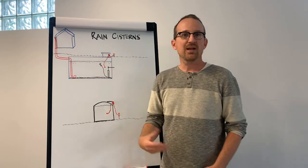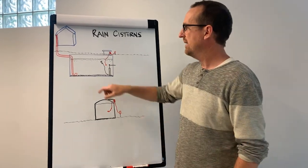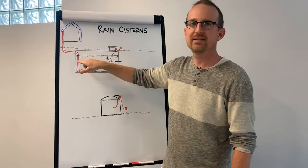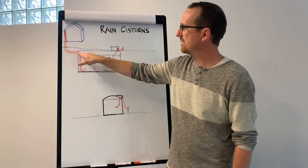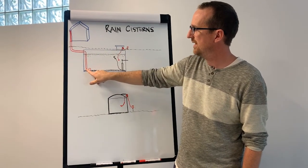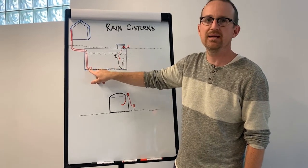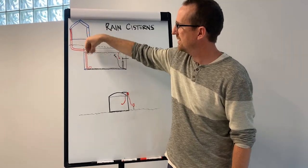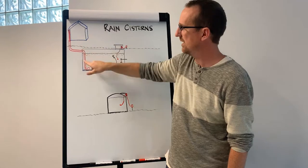The way to address that issue is by first making sure that you have what's called a calming inlet in the cistern. And this can be as simple as just bringing your inlet pipe down to the floor of the cistern and then bending it back up 180 degrees. And what that does is it avoids water pouring into the top of the cistern and stirring things up.